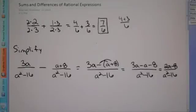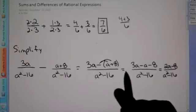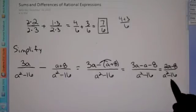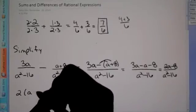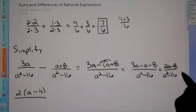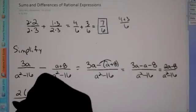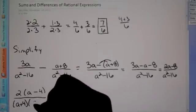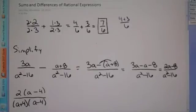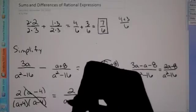Once you've done that, ask yourself: is there anything you can factor? On these original problems, don't factor anything to begin with — wait until you've combined the numerators. Now we can factor out a 2 on top, which leaves a minus 4. On the bottom, we can factor it using the difference of squares form — a squared minus b squared — to get a plus 4 times a minus 4. Therefore, the a minus 4 on top and bottom cancel out, and our final answer is 2 over a plus 4.